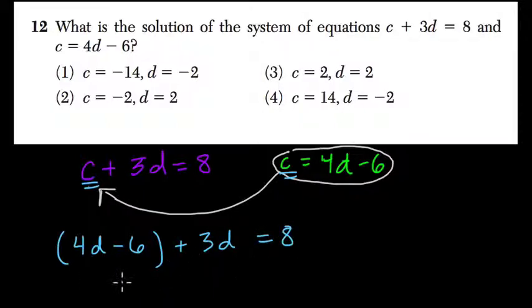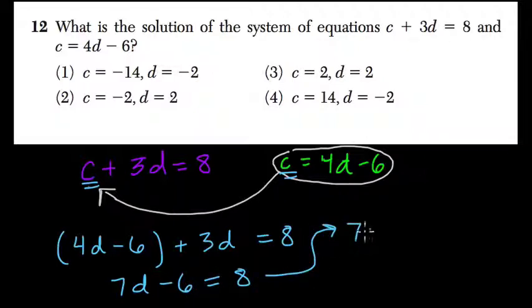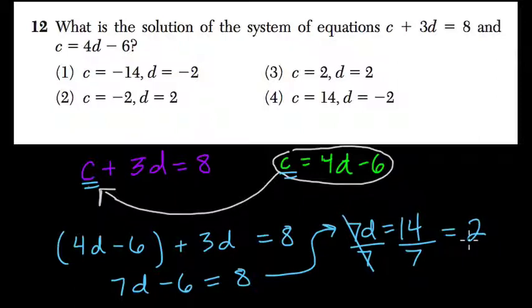So if I simplify this side, I get 7d minus 6 equals 8. I add 6 to both sides and 7d equals 14, divide both sides by 7, right? And that helps me solve for d. So d equals 14 over 7, which equals 2.